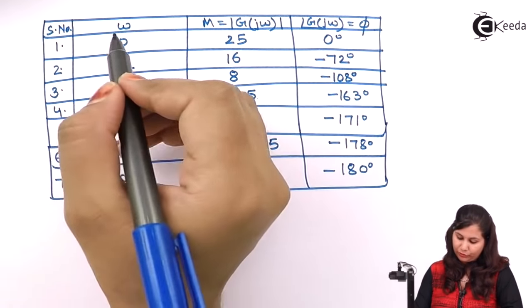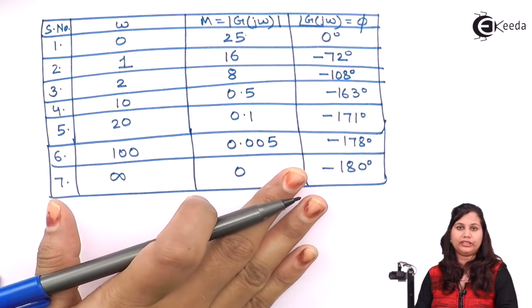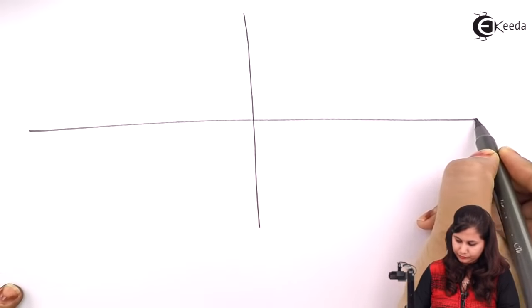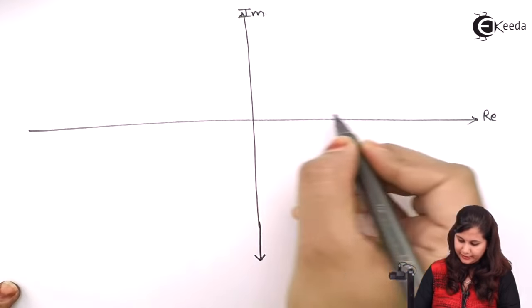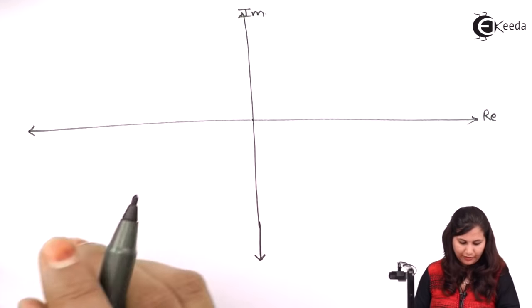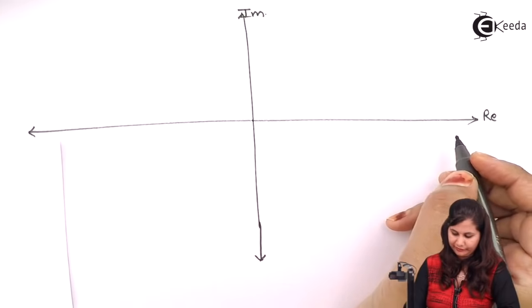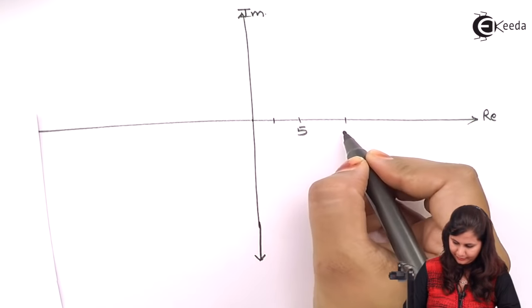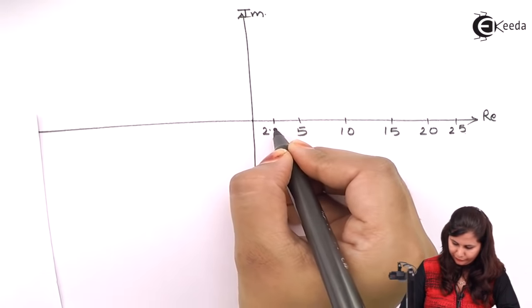For various values of omega from 0 to infinity, we have obtained the magnitude and the phase angle. Now we are going to plot this on polar coordinates to find the polar plot of the system. The imaginary axis is vertical and the real axis is horizontal. Magnitude is plotted on the real axis, with divisions at 5, 10, 15, 20, 25.